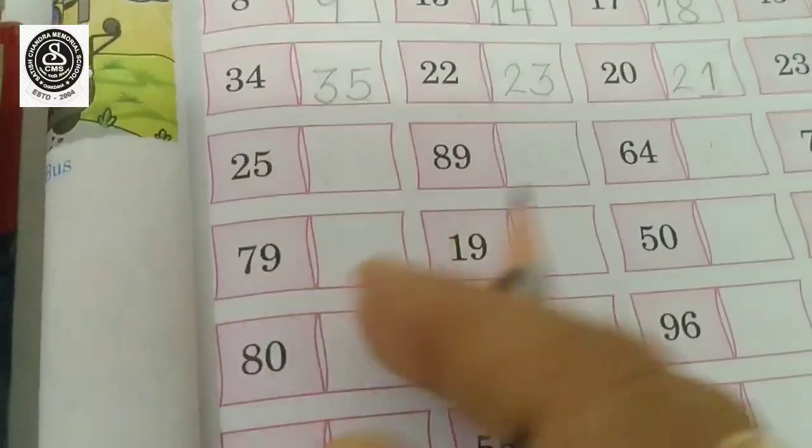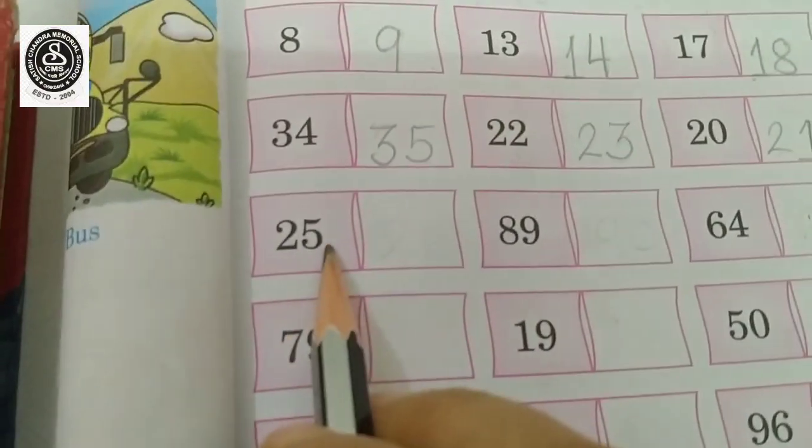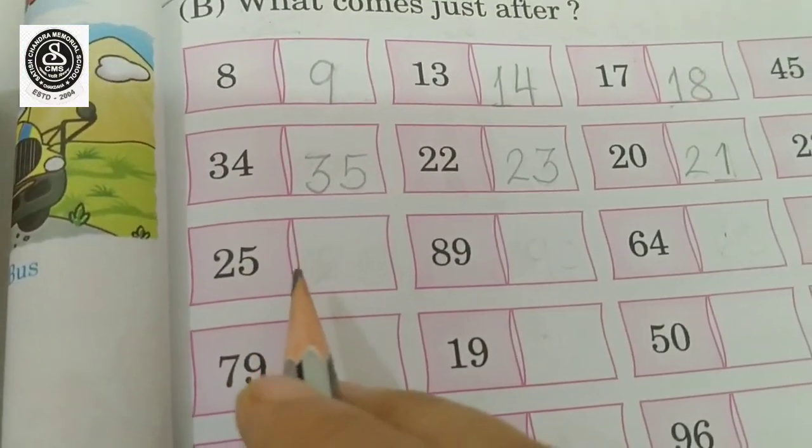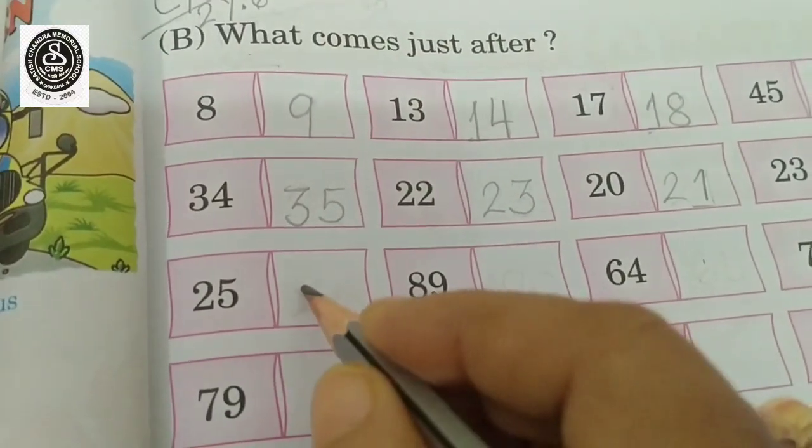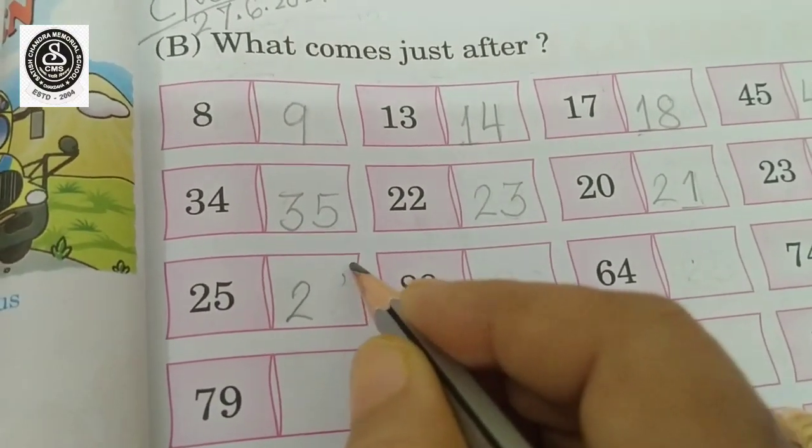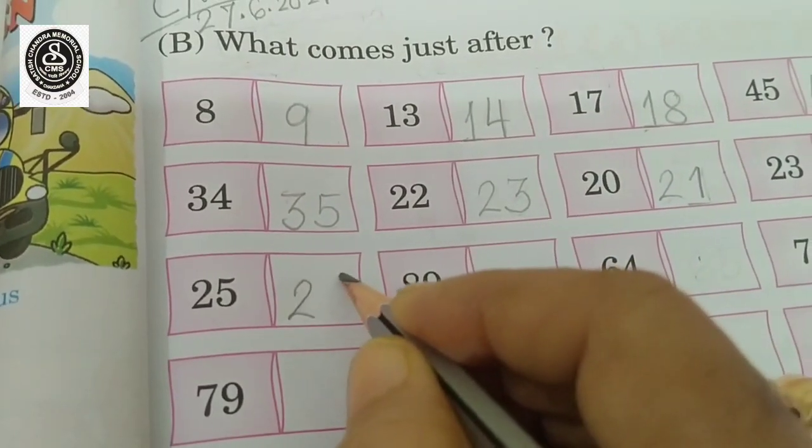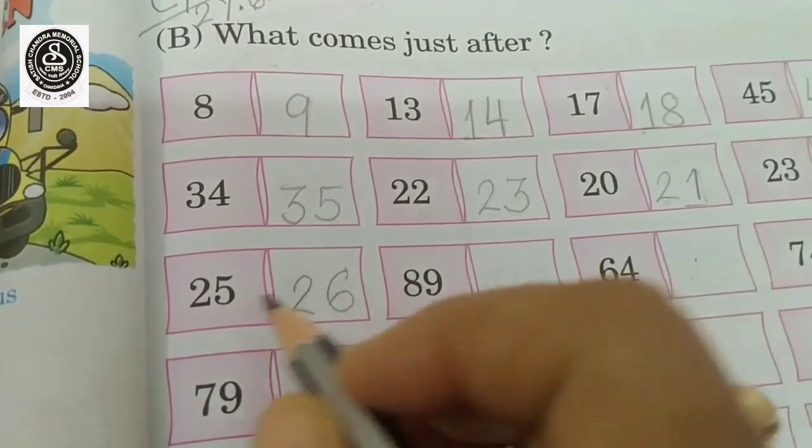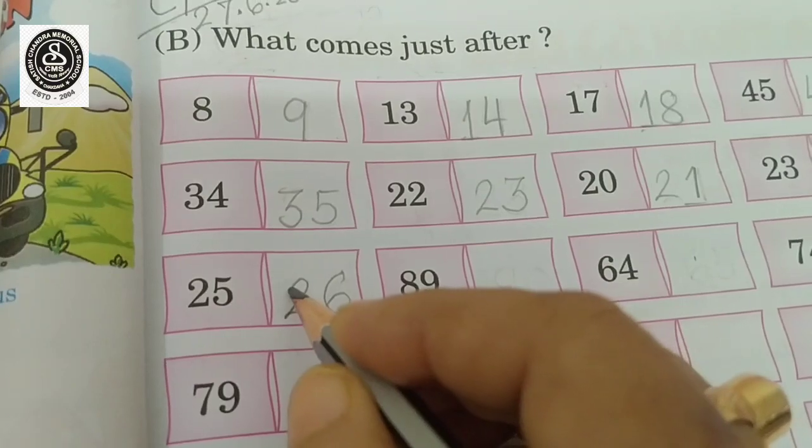And here you can see 25 is there. So what comes after 25? Yes, 26. After 25, 26.